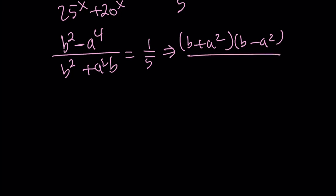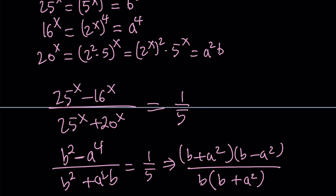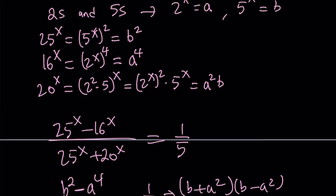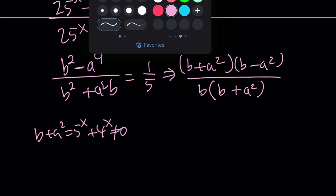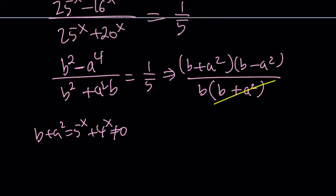And the bottom, the two terms have a common factor, b. Inside the parentheses, we have b plus a squared. Now, notice that b is 5 to the power x. So b plus a squared becomes 5 to the x plus 4 to the x, which is not going to be 0 at all. So we can simplify this. Cross these out. And this equals 1 over 5.